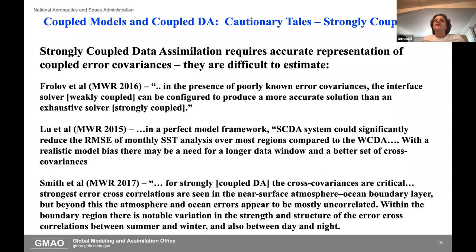All of that coupling and coupled DA sounds nice, but there are some cautionary tales. With strongly coupled DA, there are many quotations from different papers basically saying the same thing: the coupled error covariances are very, very difficult to estimate. Essentially, if you try to do it, you can end up doing a worse job in some cases than if you just did the weakly coupled approach.